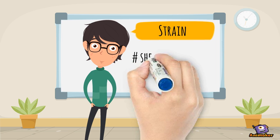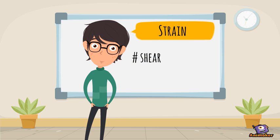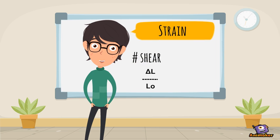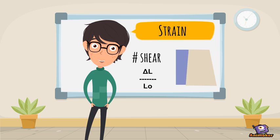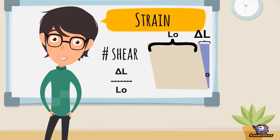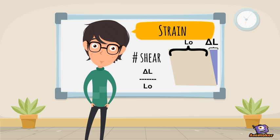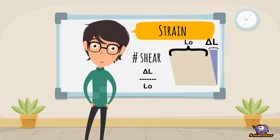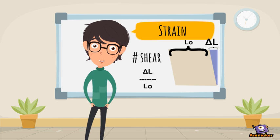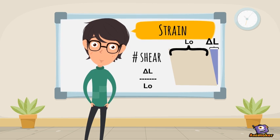The last one is shear strain. It's the most confusing one because it has something to do with angle. The deformation caused by the shearing force is measured by angle — the angle changed is called the shearing angle, or theta. The force acting on the upper surface caused it to move by delta L, and the formula for shearing strain is delta L over the original length.